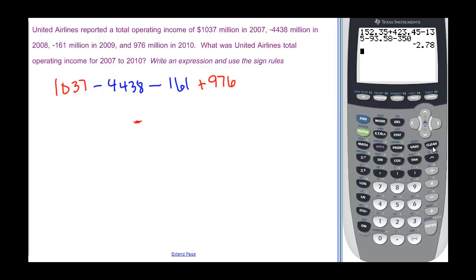Clear this out. Put in our 1,037 minus 4,438 minus 161, and then plus the 976. And we get, sure enough, it's a big number. They are way in the hole because this is 2,586 million dollars in the hole.